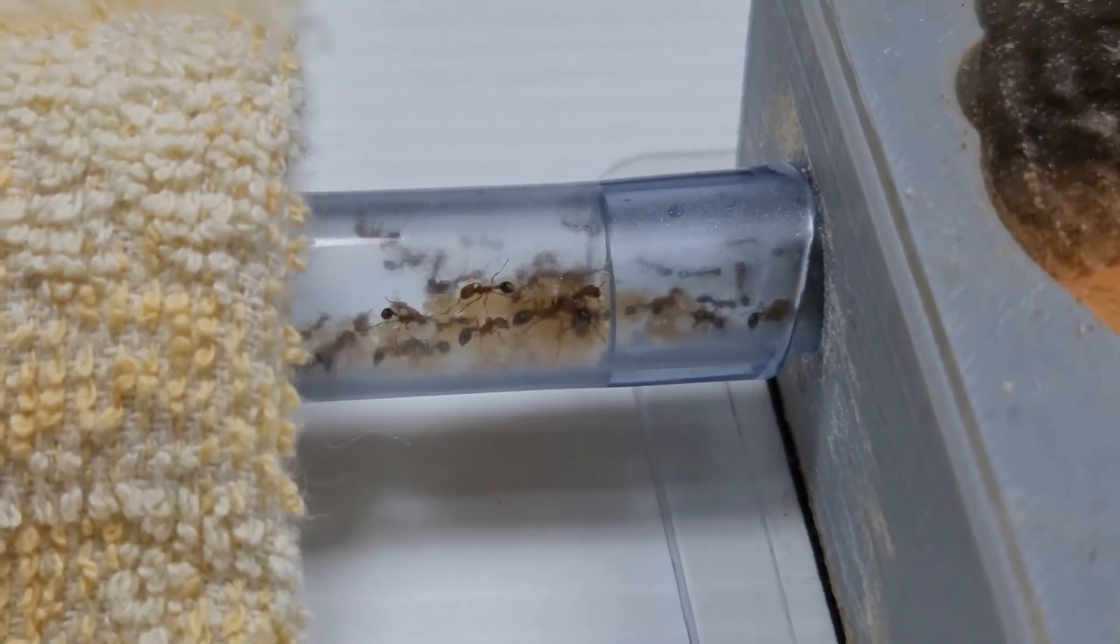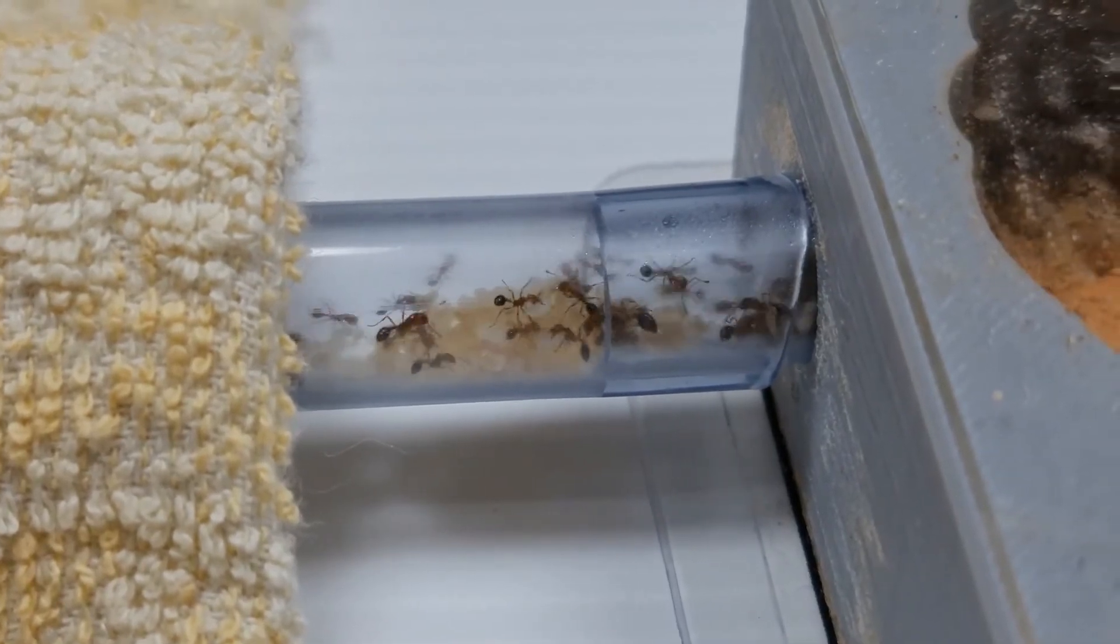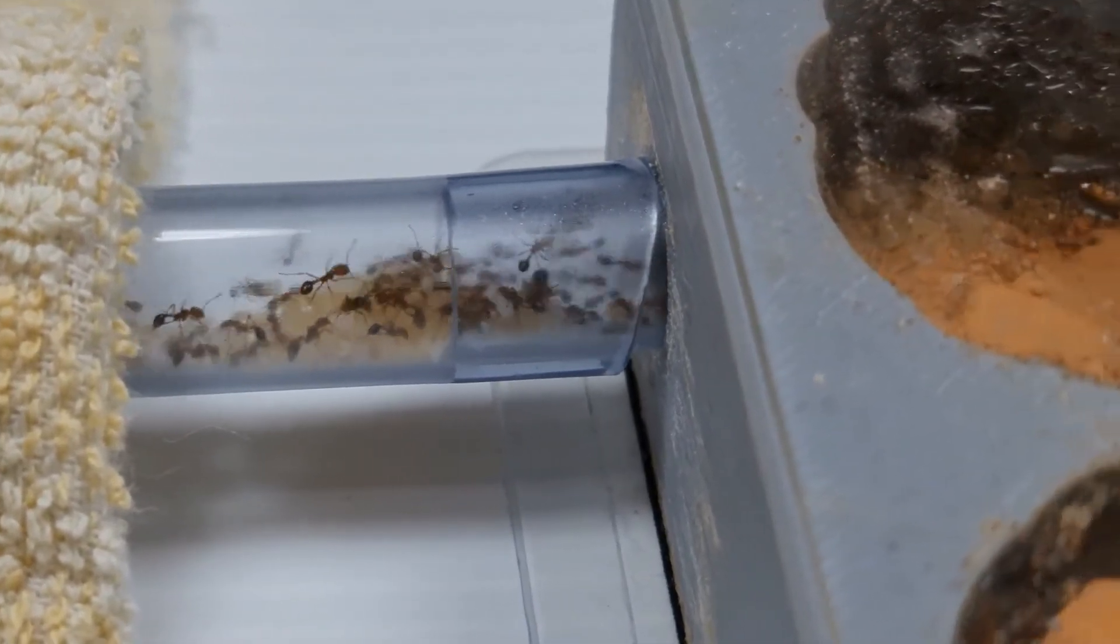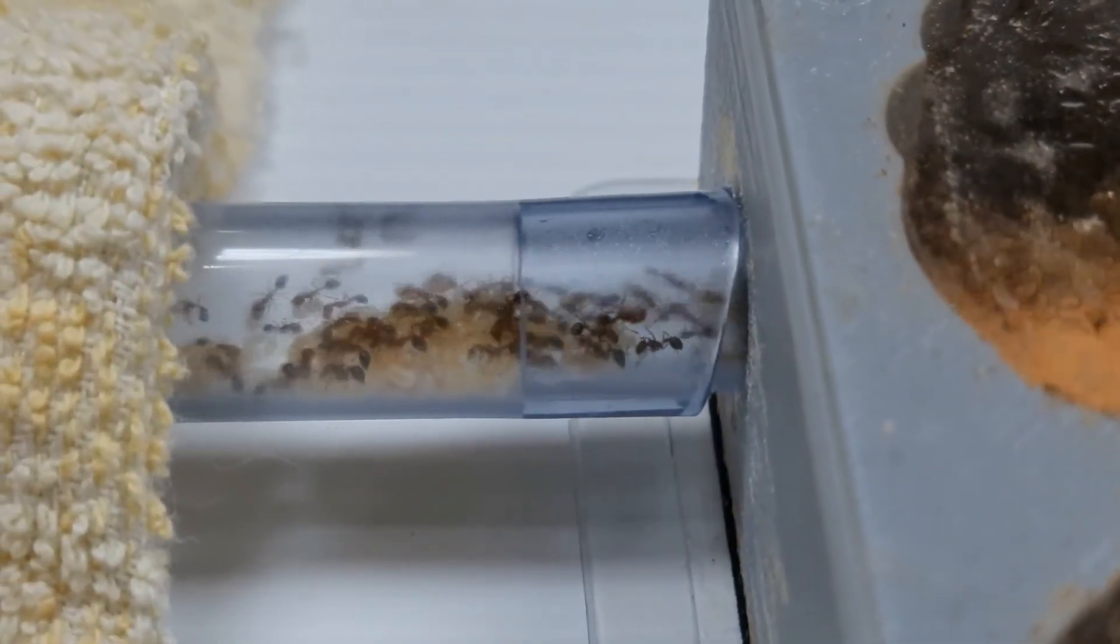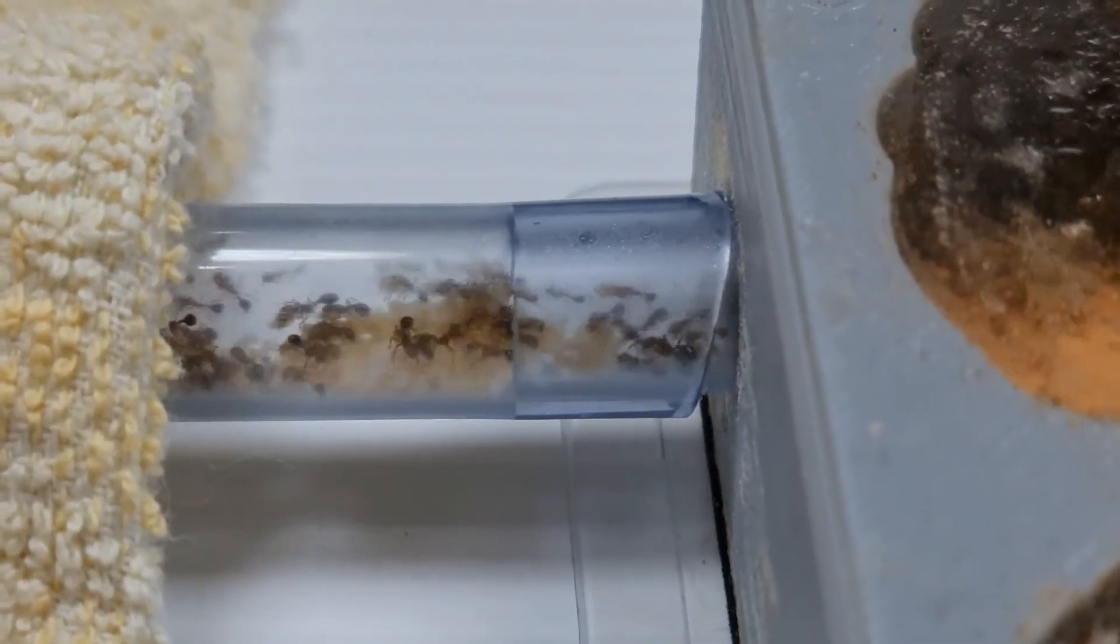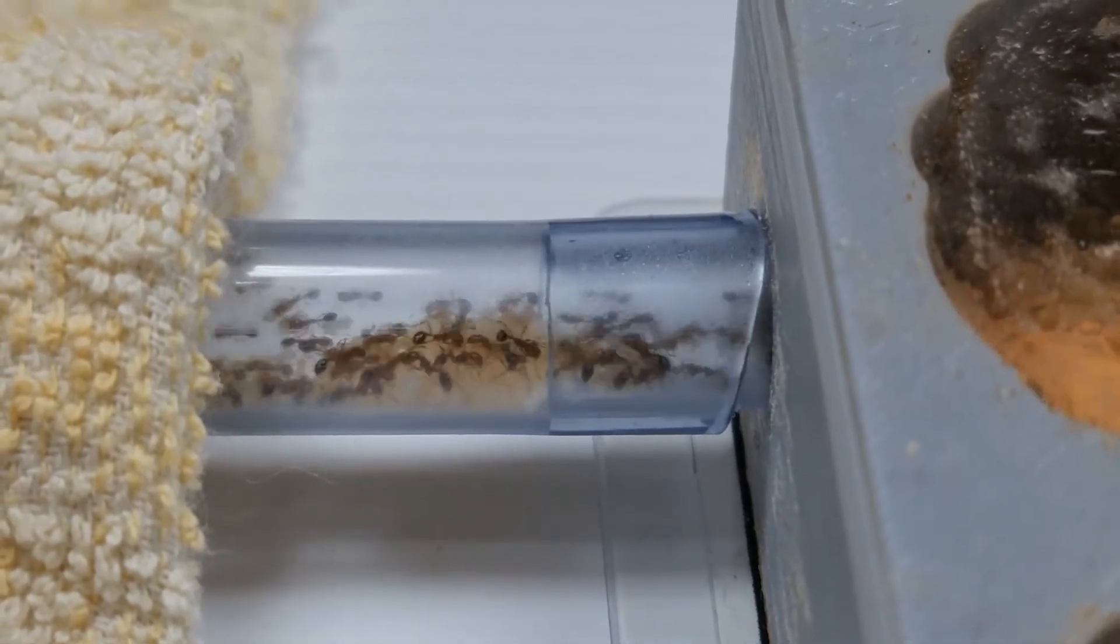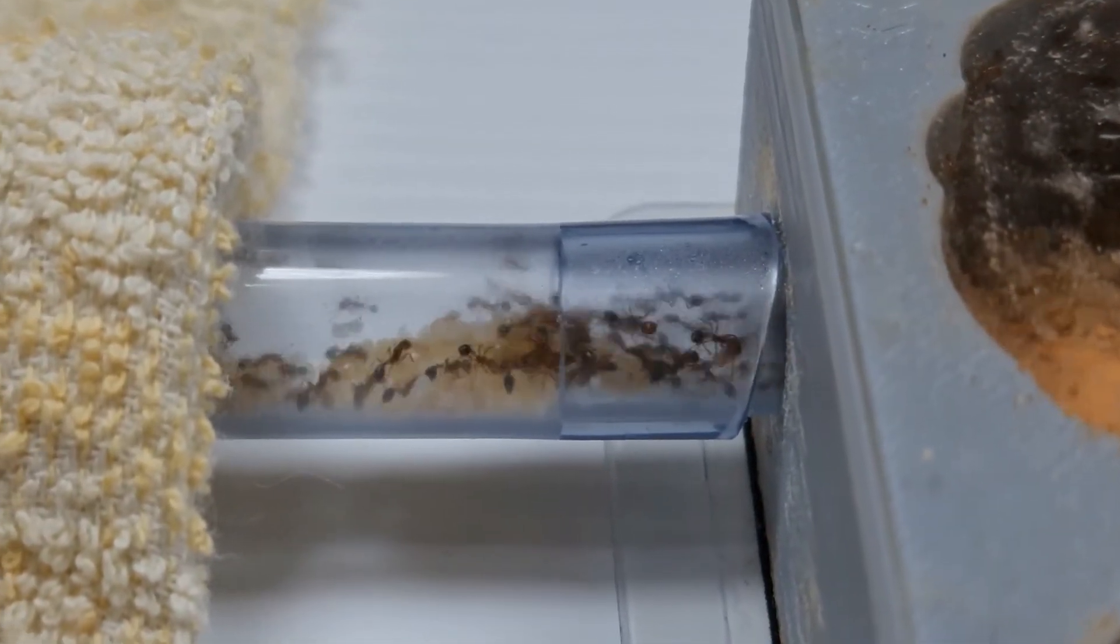To help them along the way, do keep a towel over the test tube. This will make them feel more comfortable moving in, instead of the camera lights shining on them. The light and dark methods are common practices for transferring ants into new test tubes among ant keepers, and are widely covered on the internet.